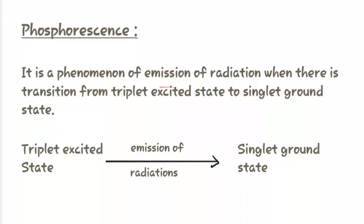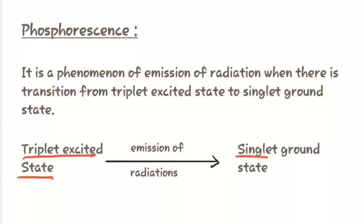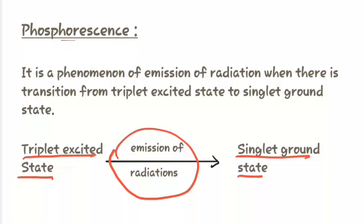The next term is phosphorescence. It is the phenomenon of emission of radiation when there is a transition from the triplet excited state to the singlet ground state. That is, when there is a transition from the triplet excited state to the singlet ground state, there is again an emission of radiation, which is known as phosphorescence.